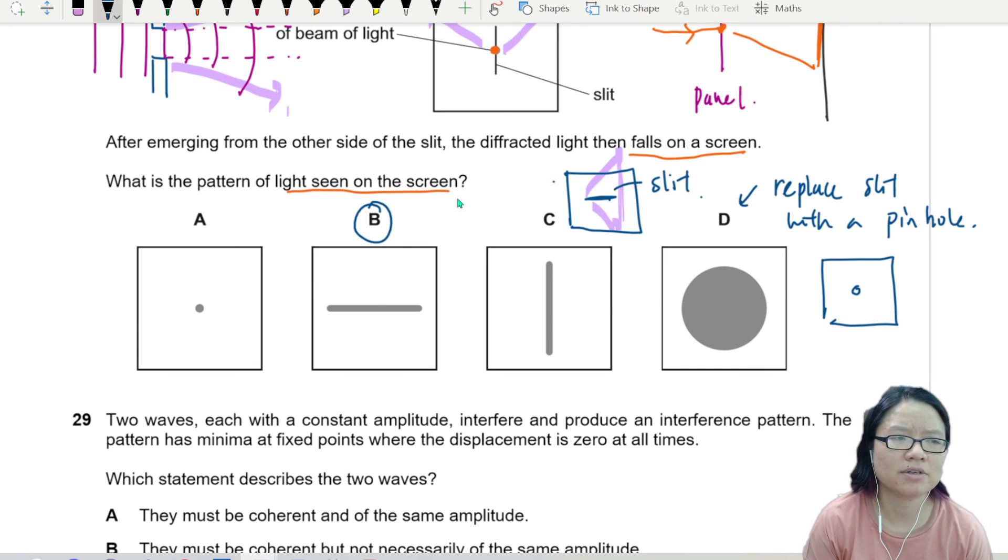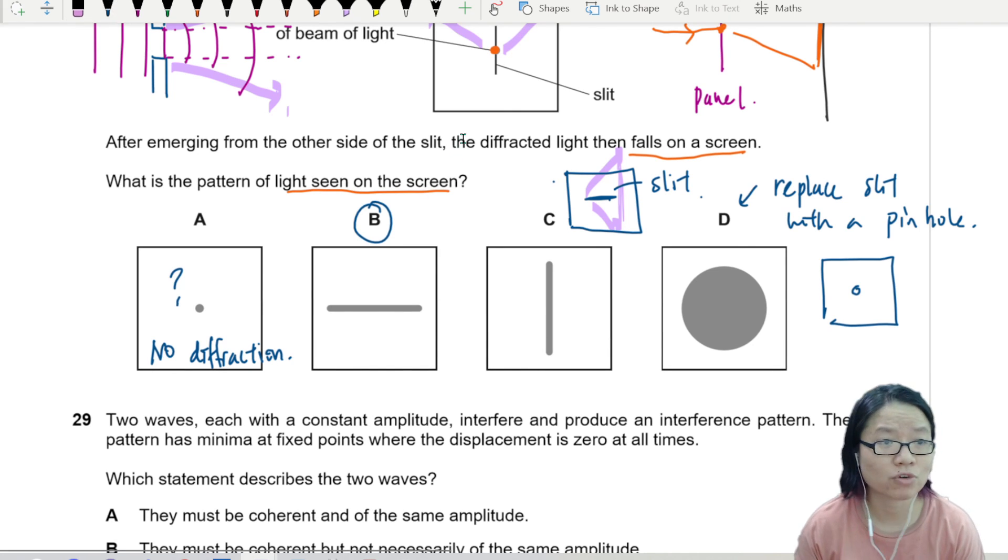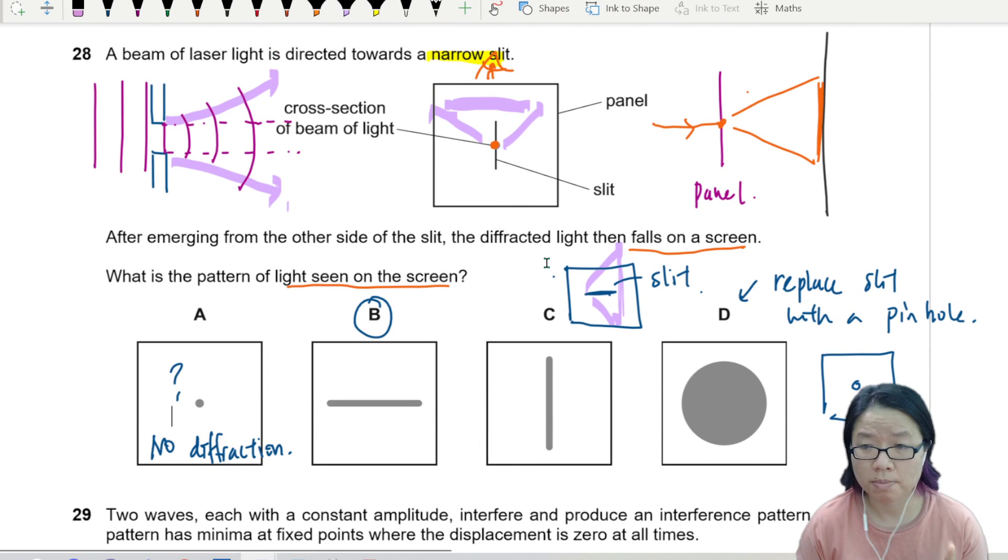And A, this one shows no diffraction, which is an immediate sus law. So that's it for this question. It's just identifying the diffraction pattern. Remember, you will spread outwards away from your hole or your gap.